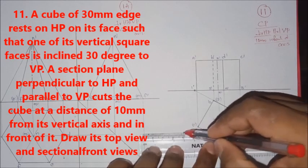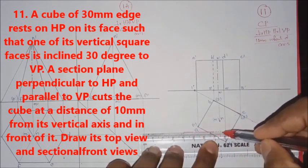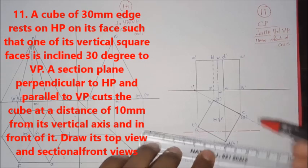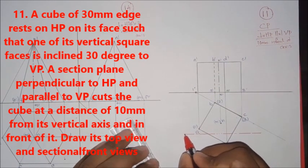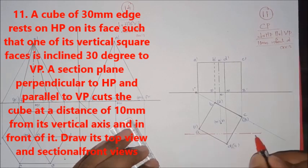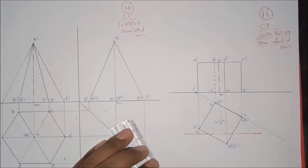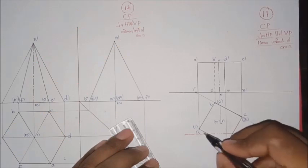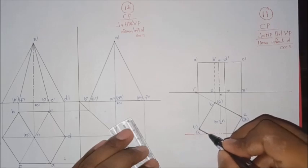Here we are going to add the section. The two of you will be dark in the next stage. This is the common portion, and the front portion will be cut here. This portion will be cut here, so the remaining portion will be dark.